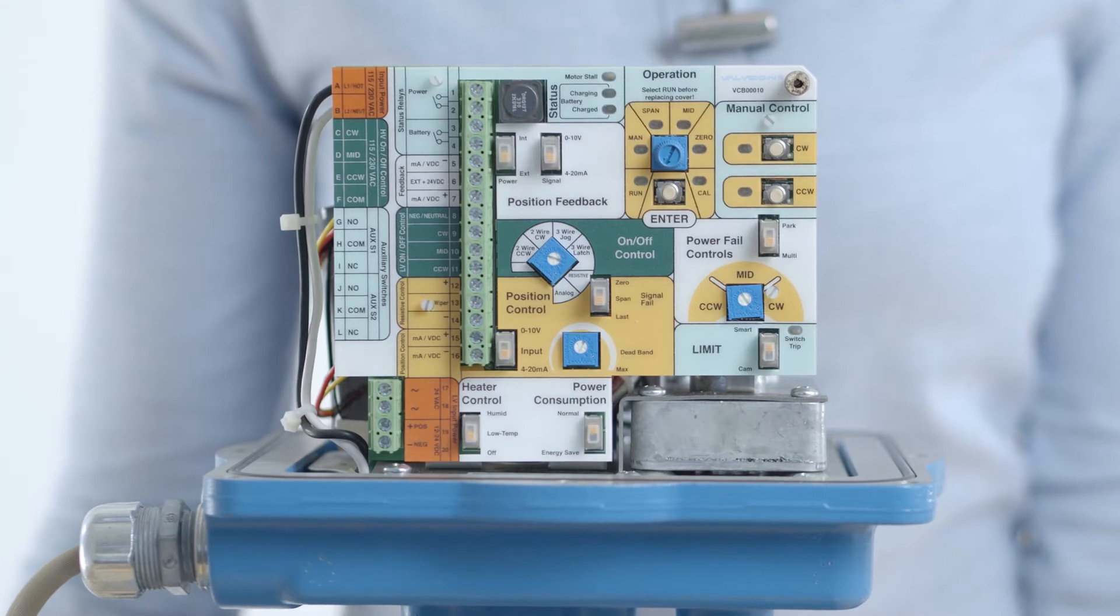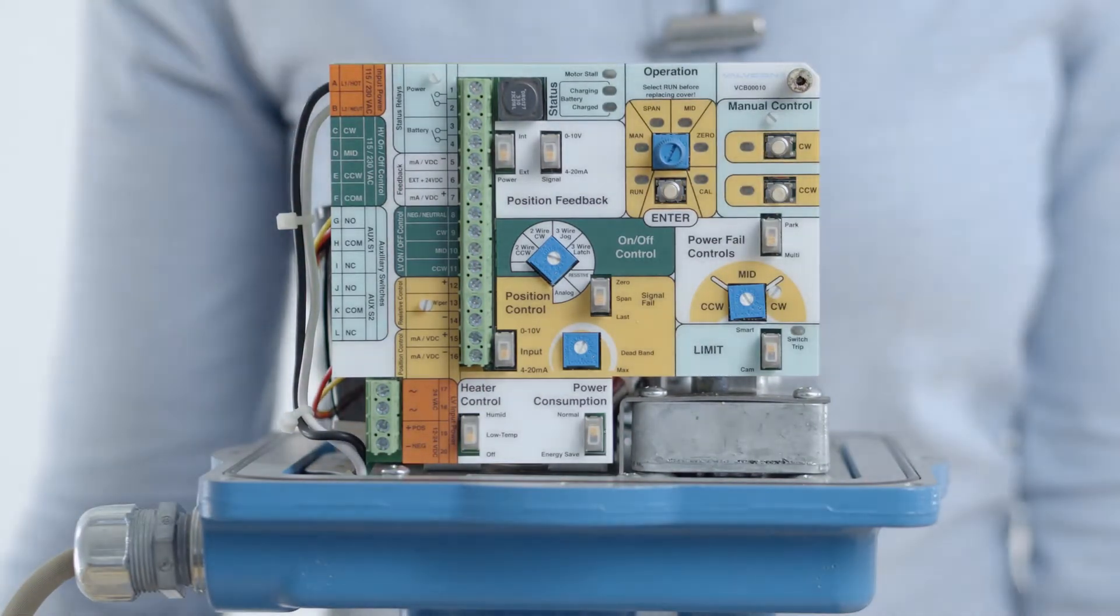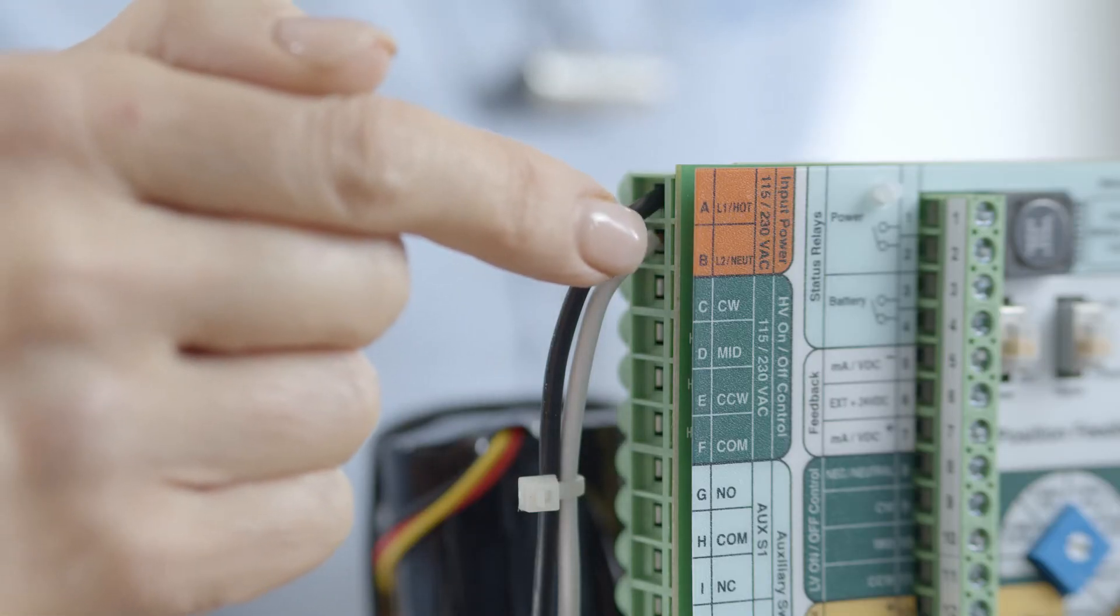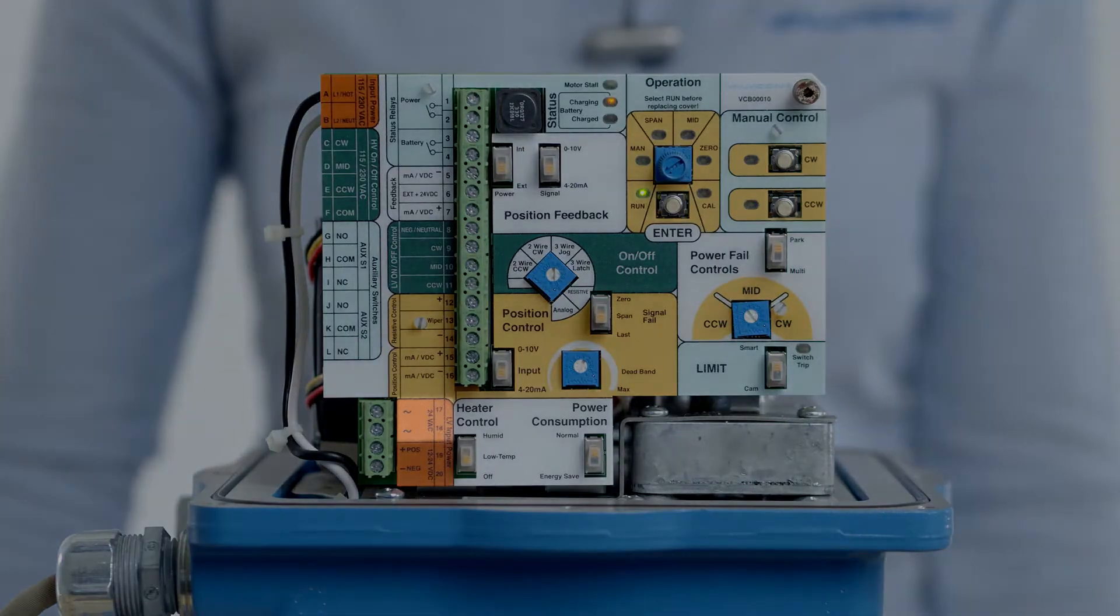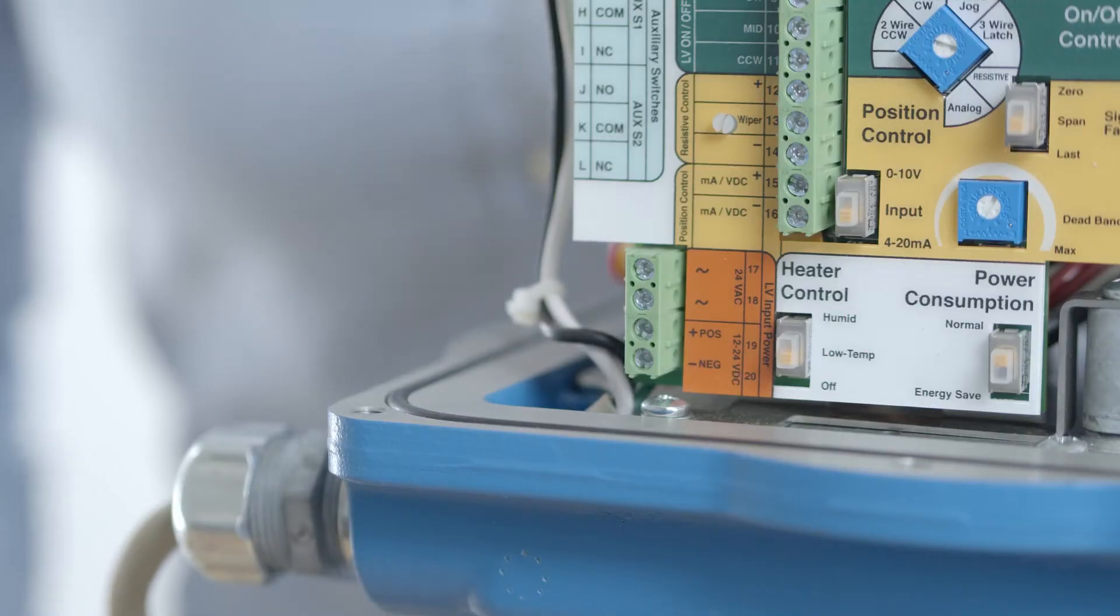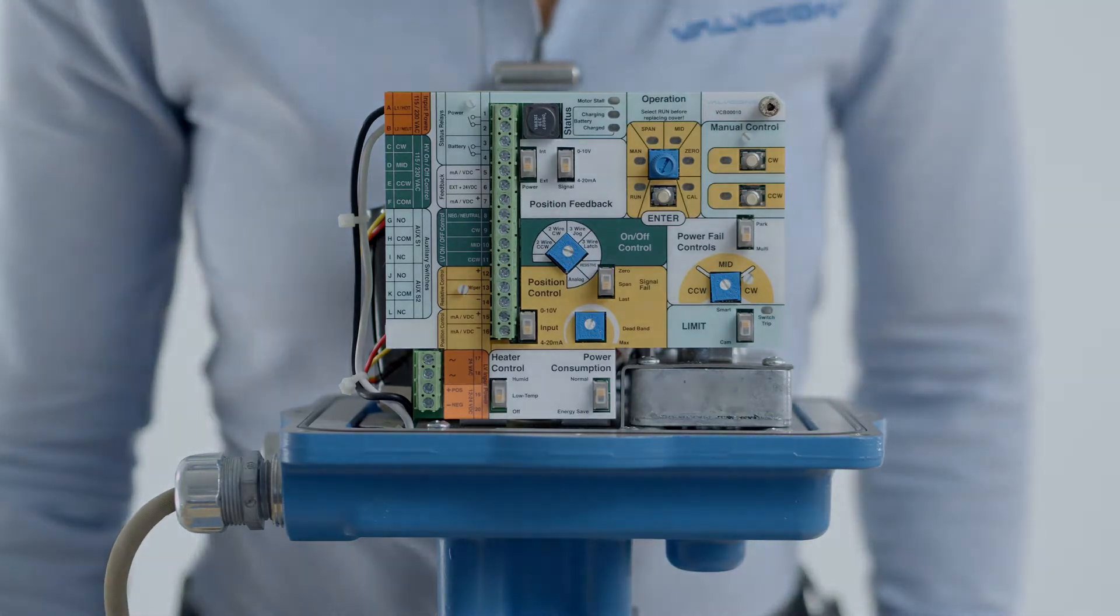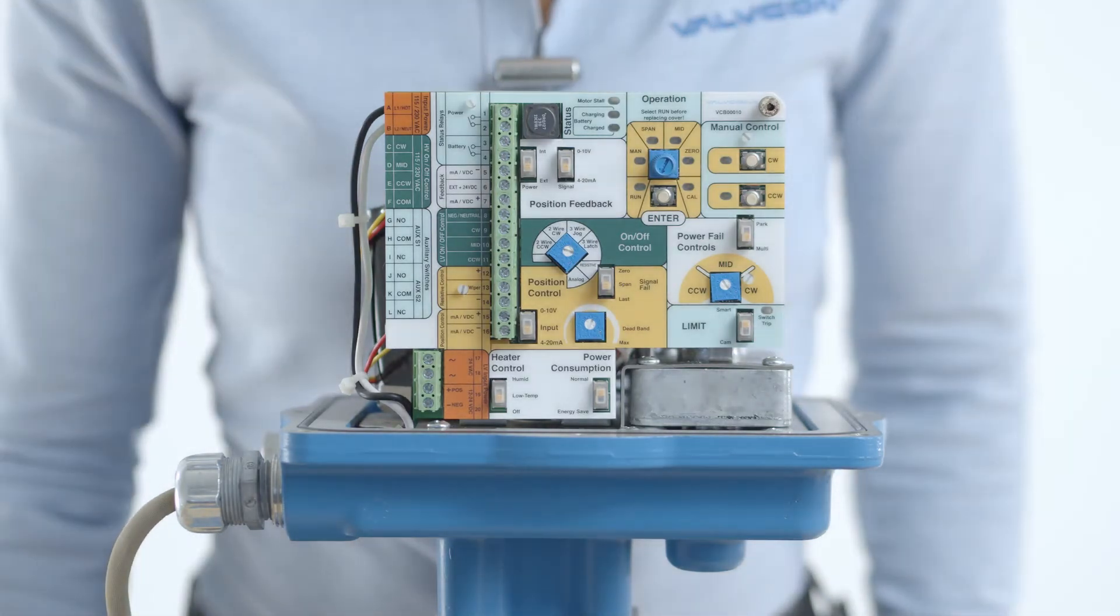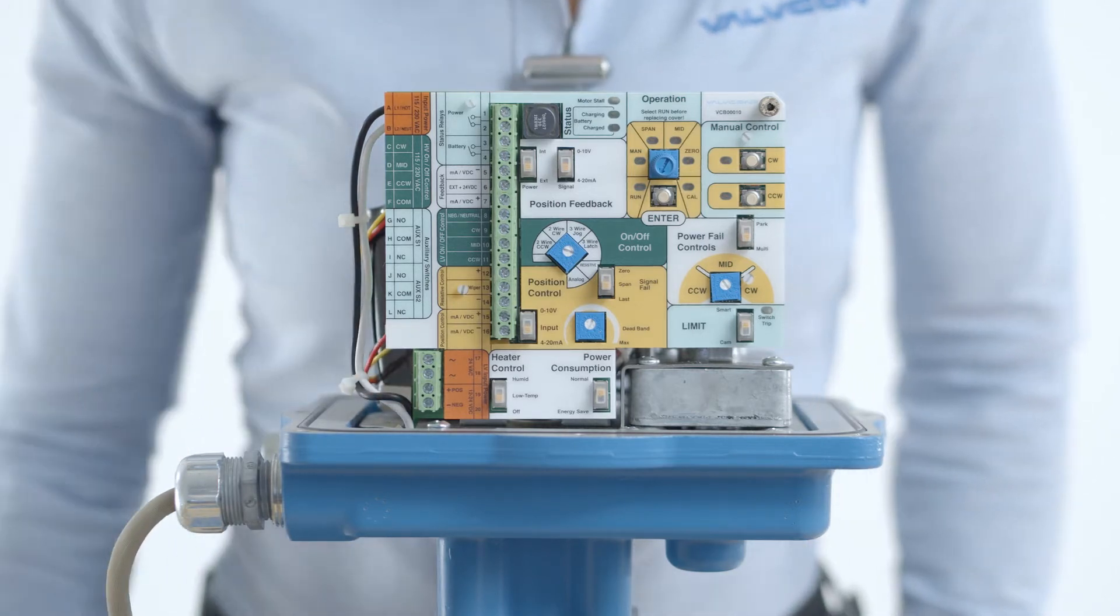The actuator accepts either 115 or 230 volts AC as the main input power. Voltage must be supplied to the universal control board at terminals A and B. The board also accepts 24 volts AC as the main input power at terminals 17 and 18. And finally, the board accepts 12 or 24 volts DC as the main input power at terminals 19 and 20.